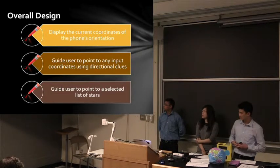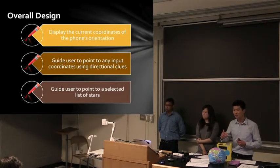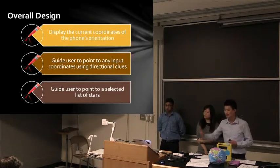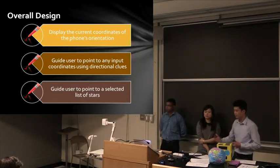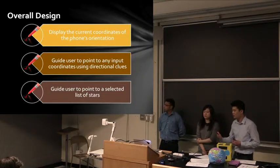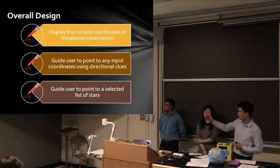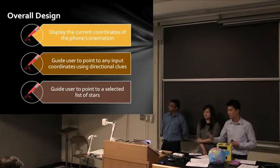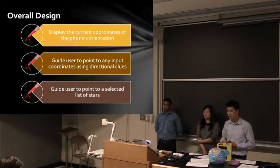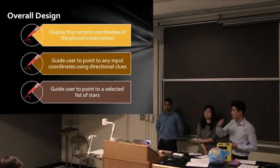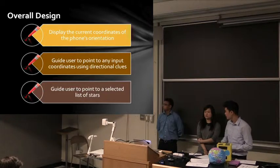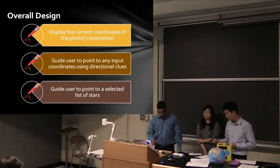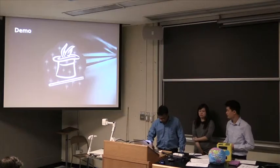The third functionality is that instead of having to look up coordinates in a textbook, we provide users with a list of common stars that satellite operators use. They simply pick from that list and they will be guided to that star. Ajin will demonstrate this right now.